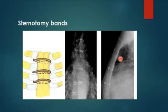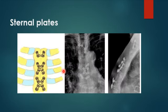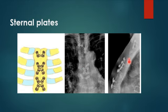There are also sternotomy bands — approximating the sternum with ring-shaped bands visible on maximum intensity projection and volume rendering CT. Finally, sternal plates — similar to vertebral fixation plates — are fixed to both sides of the sternum with screws, visible on AP and lateral views.